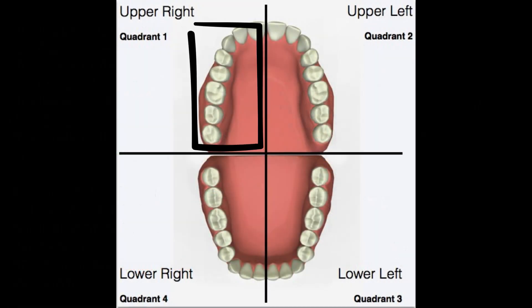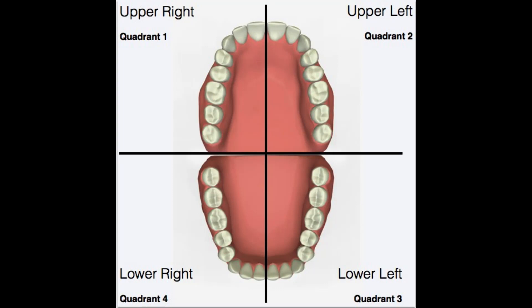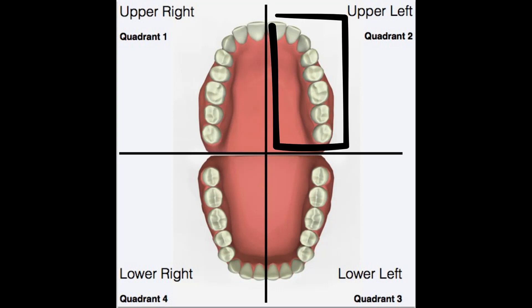The maxillary right quadrant, also called the upper right quadrant or quadrant number one, refers to that area of the oral cavity. The maxillary left quadrant, also called the upper left quadrant or quadrant number two, refers to another area of the oral cavity.